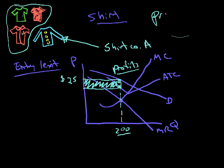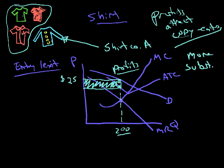That's right. Profits attract copycatters. These companies are going to start making these shirts. And what happens? That means there's more substitutes. And if there's more substitute companies making these kinds of shirts here, something happens to the demand curve for this shirt company.